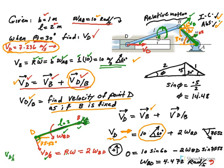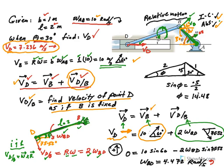Based on the direction of BD rotating counterclockwise, velocity of D relative to B should be directed downward. You could also do this vectorially using omega cross r, but it is much easier to solve this problem using the scalar approach rather than the IJK method. So r·omega gives 2 times omega BD for the velocity of D relative to B.